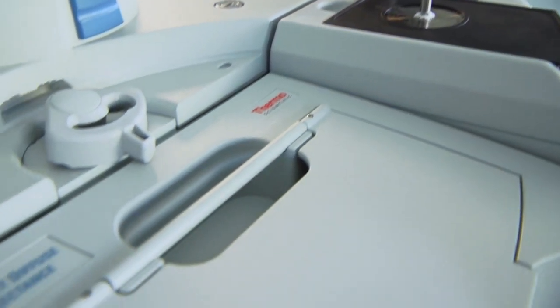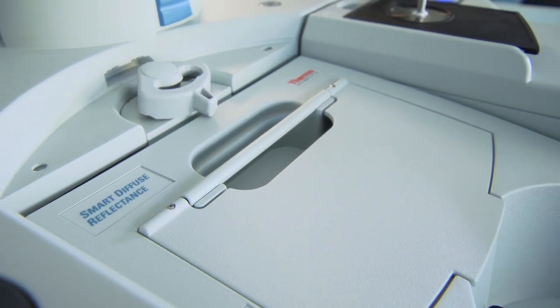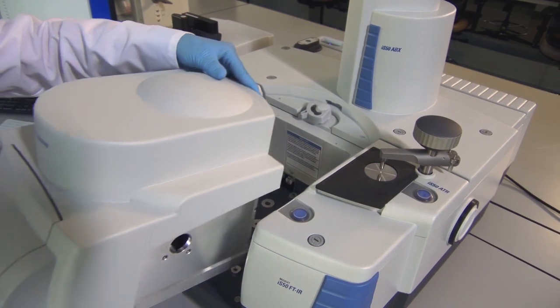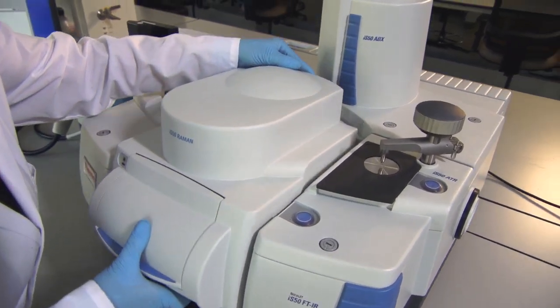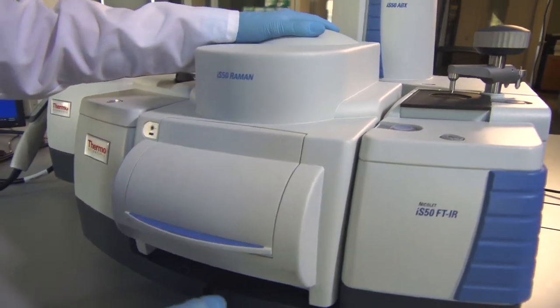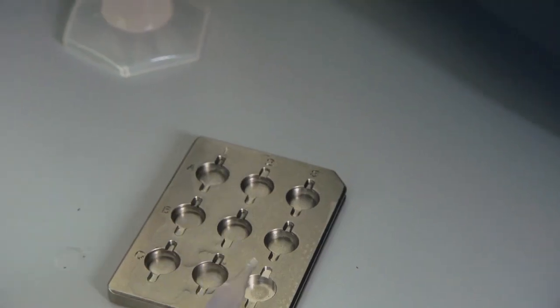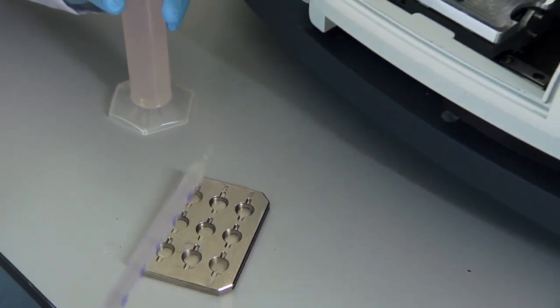Since the ATR is built in, your sampling compartment is free for any other accessory. For example, working in tandem with the built-in ATR, the IS50 Raman module lets you rapidly switch from mid-infrared to Raman without reconfiguring optics or waiting for the instrument to stabilize.